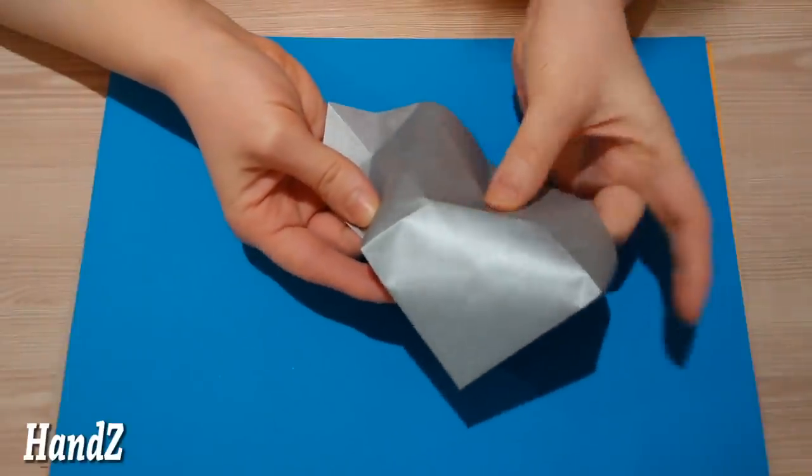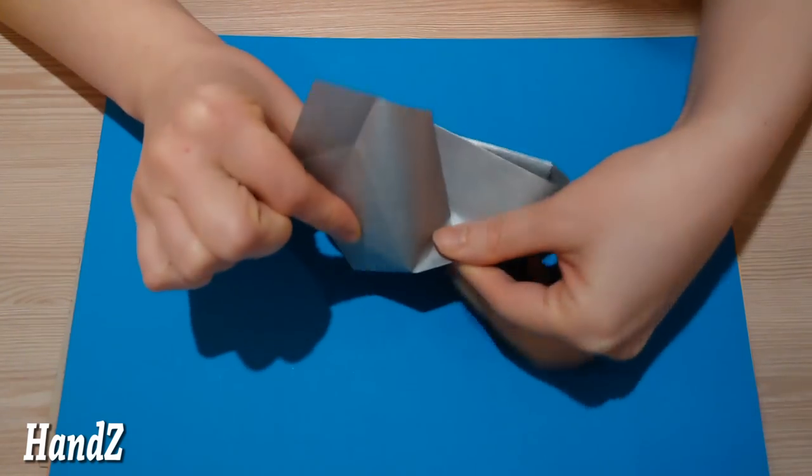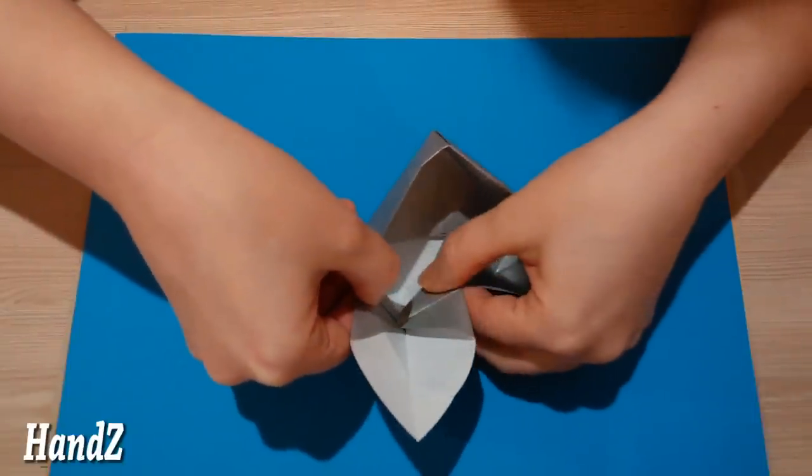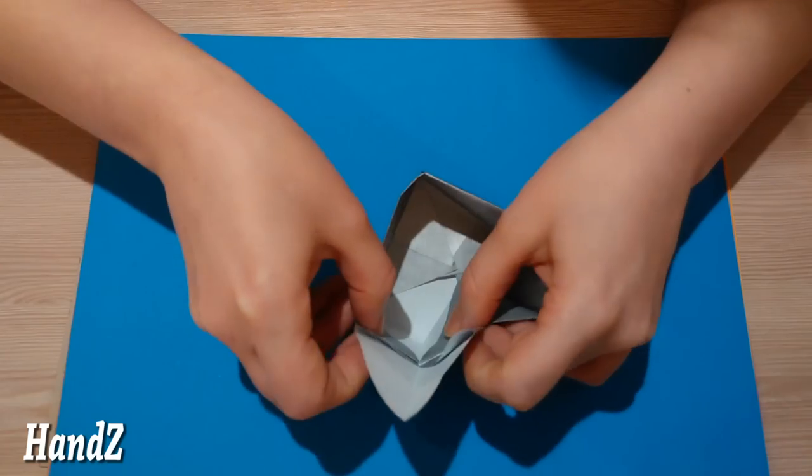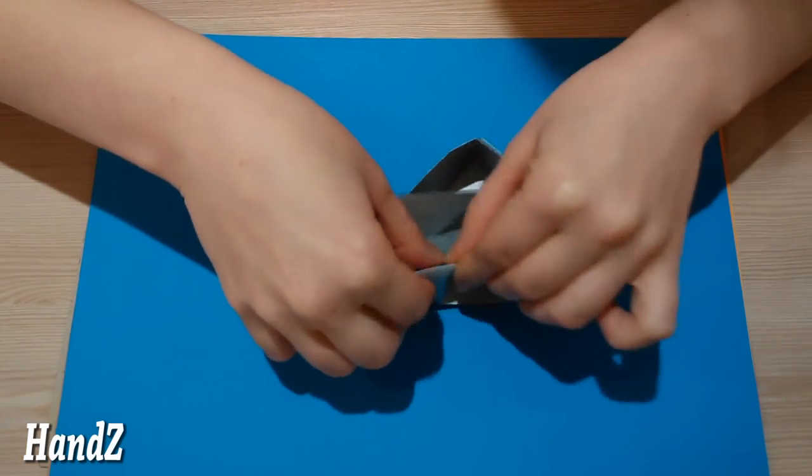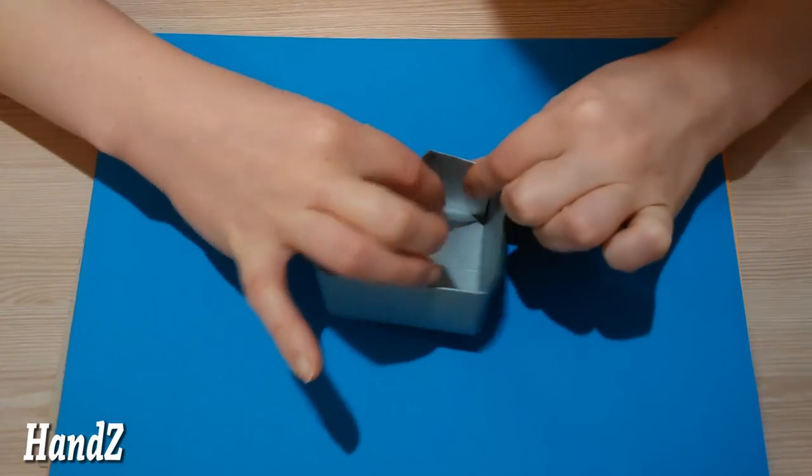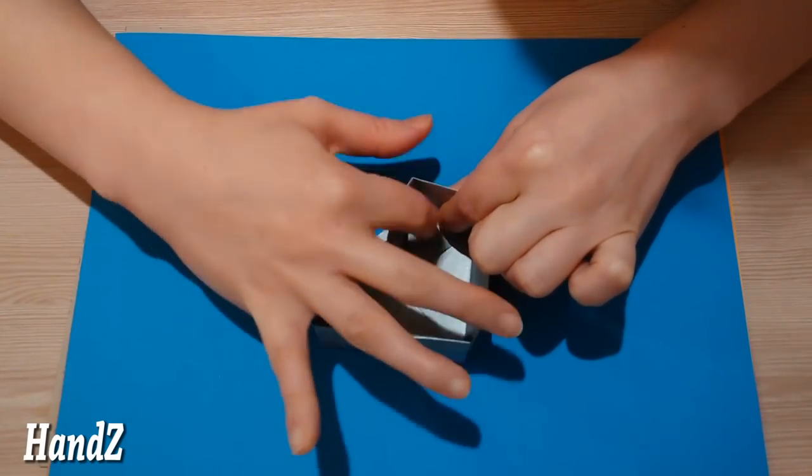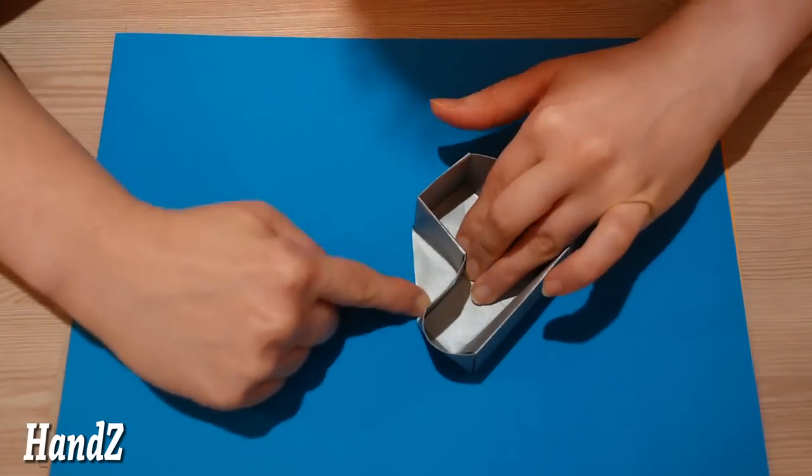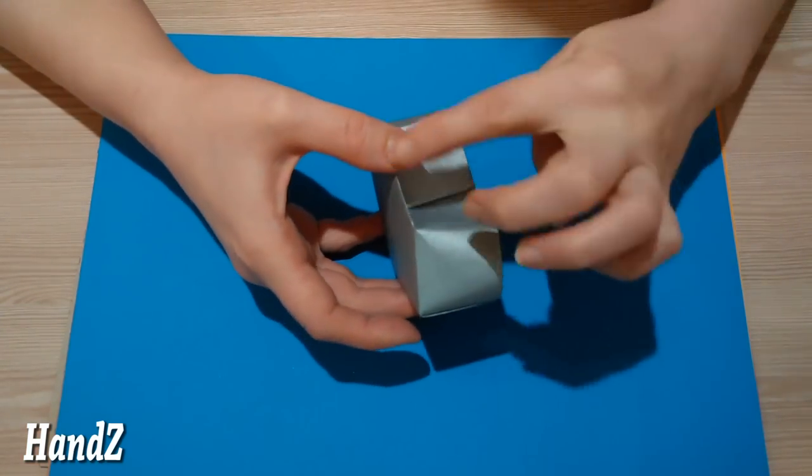And here we have this diagonal crease. And we push it inside and flatten. And then fold the flaps inside. Flatten our triangle once more. And then make the edges sharp.